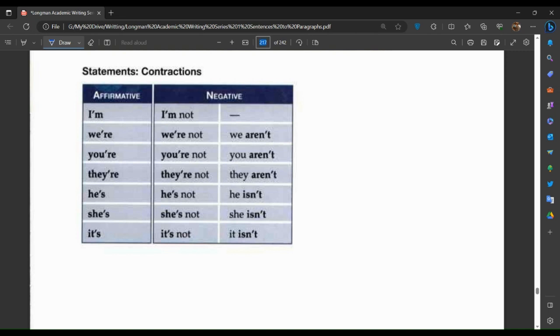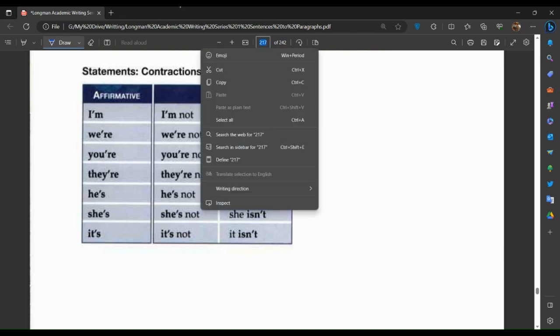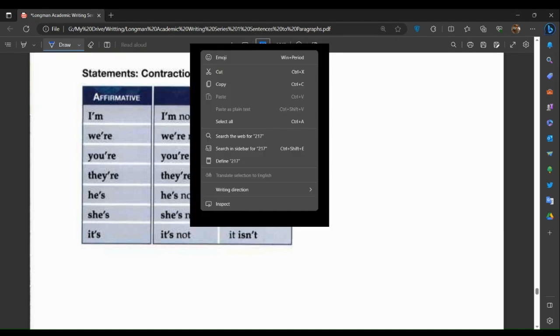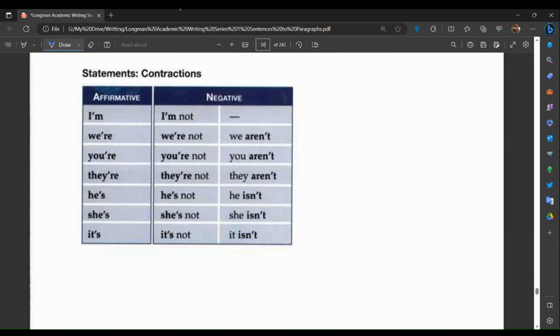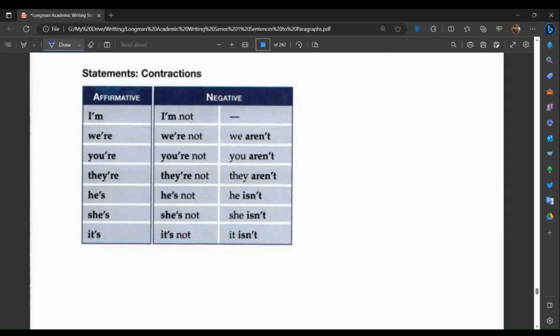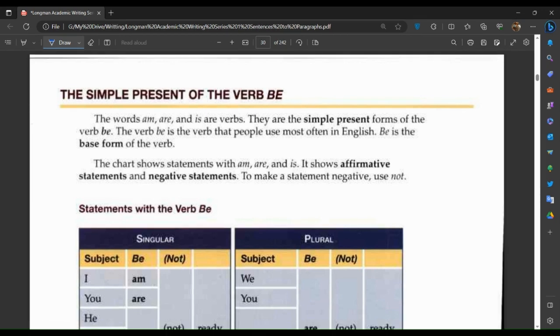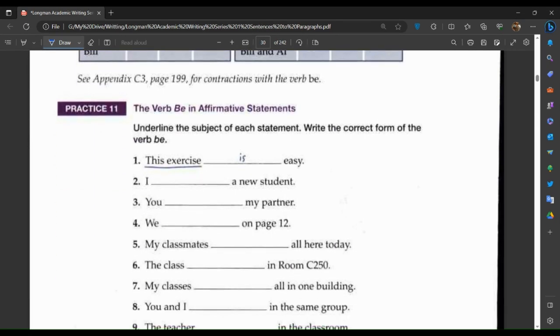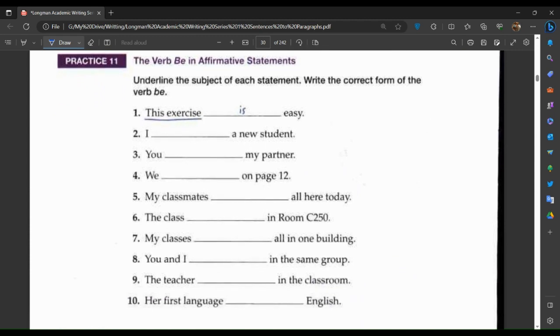Let's return back to our previous page. Practice 11: the verb be in affirmative statements. Underline the subject of each statement. Write the correct form of the verb be.